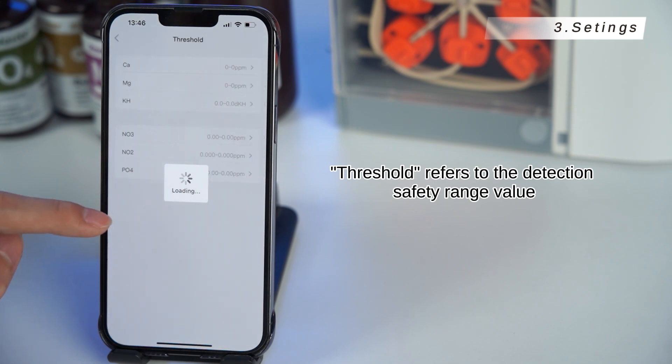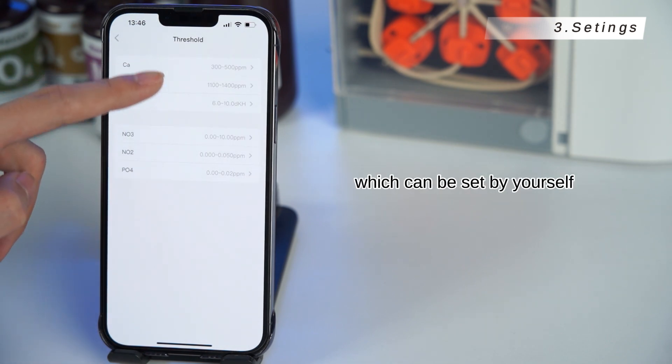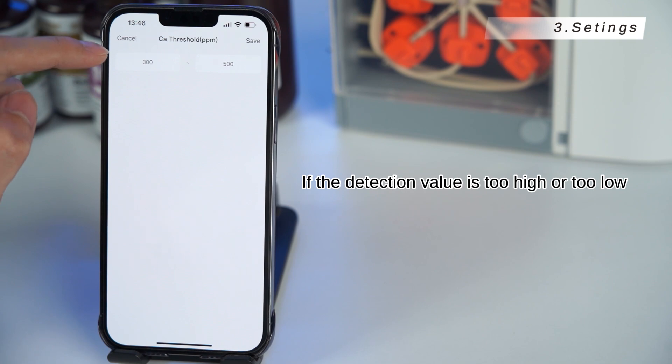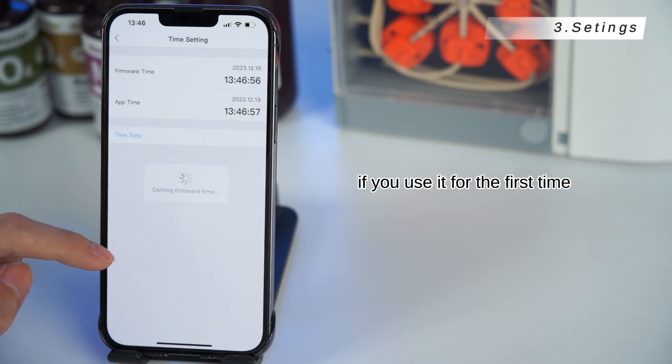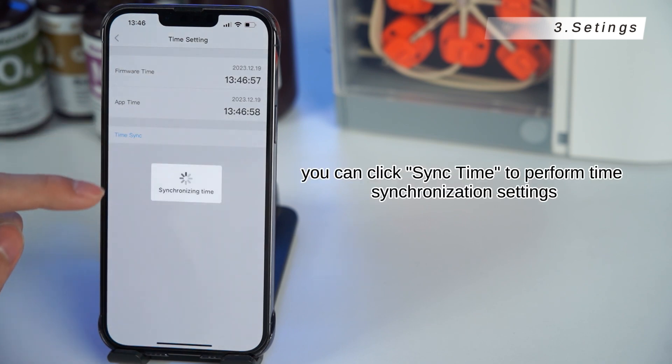Threshold refers to the detection safety range value, which can be set by yourself. If the detection value is too high or too low, the system will issue an alarm. Time settings, if you use it for the first time, you can click sync time to perform time synchronization settings.